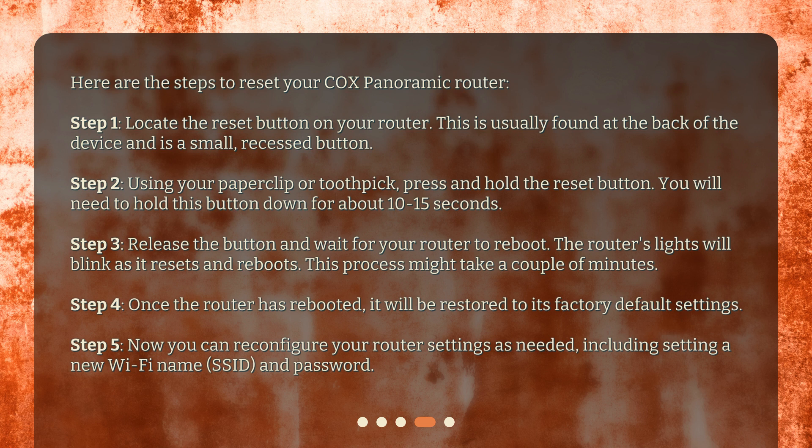Step 3: Release the button and wait for your router to reboot. The router's lights will blink as it resets and reboots. This process might take a couple of minutes. Step 4: Once the router has rebooted, it will be restored to its factory default settings. Step 5: Now you can reconfigure your router settings as needed, including setting a new WiFi name, SSID, and password.